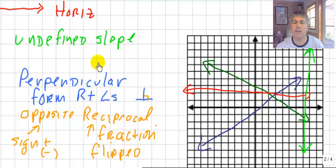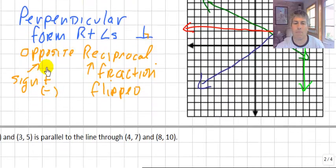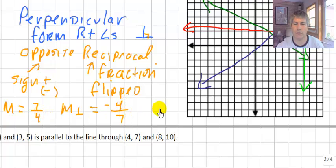So perpendicular lines, if we have lines with a couple of slopes. If one line has a slope of 7-fourths, the slope of the perpendicular line must equal negative 4-sevenths. If one line had a slope of 2, the slope of the perpendicular line would be negative 1-half.